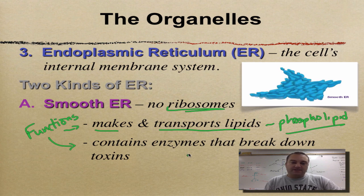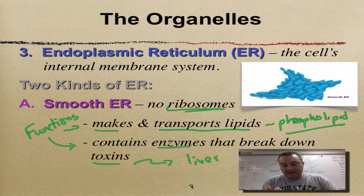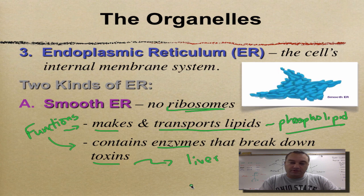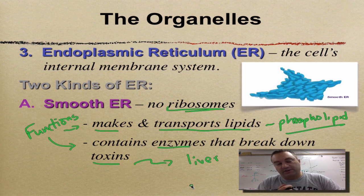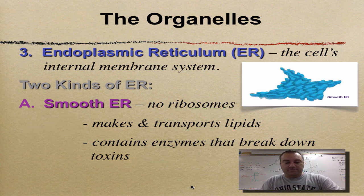In some cells, the smooth ER contains enzymes that break down toxins — think of the liver in humans. The liver is basically a filtering organ, so toxins, medications, etc. go to the liver through the bloodstream and are broken down there. A liver cell is going to have tons of smooth ER in it, though all cells have smooth ER too.